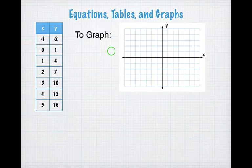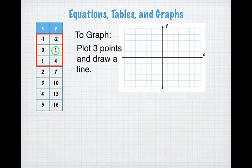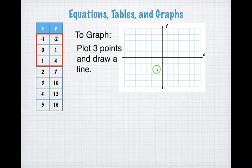Okay, so we should be graphing this now. To graph it, what we're going to do is plot three points and draw a line. I'm just going to pick the first three points here. I'm going to start with the first point: negative 1, negative 2. So to plot it — just a reminder — I go to negative 1 in the x, negative 2 in the y, and there's the point right there.